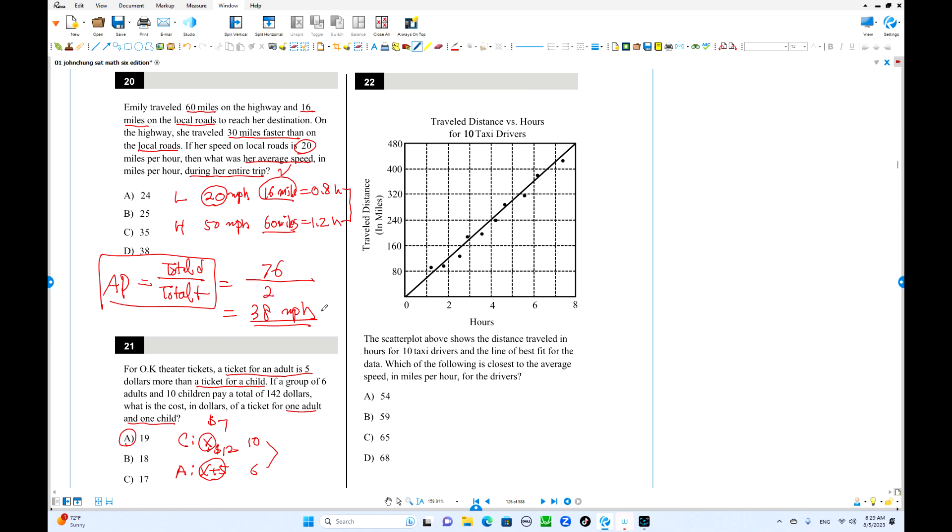Number 22, we have a scatter plot and line of best fit. This is the line of best fit, that is linear. Average speed for the drivers. This scatter plot shows speed every hour. 1 hour, distance here, 2 hour, distance there. What is speed? Distance divided by hours. You can use any point. This point is very close to the line. The latest point, 4 hours you travel 240, divided by 4, that is average speed, which is close to this number, 59.